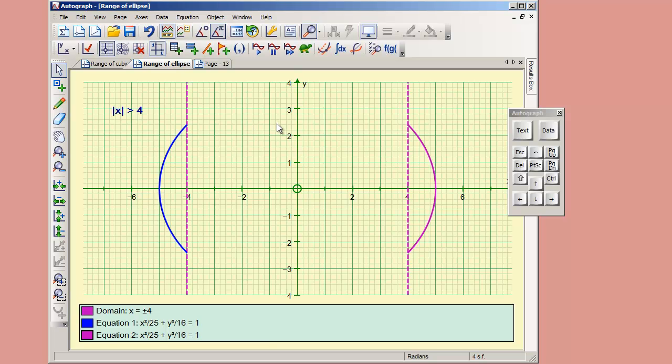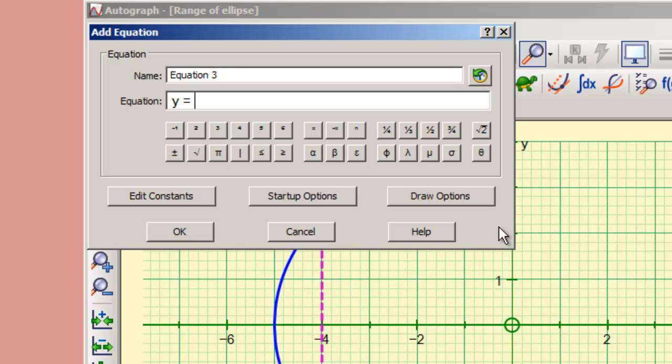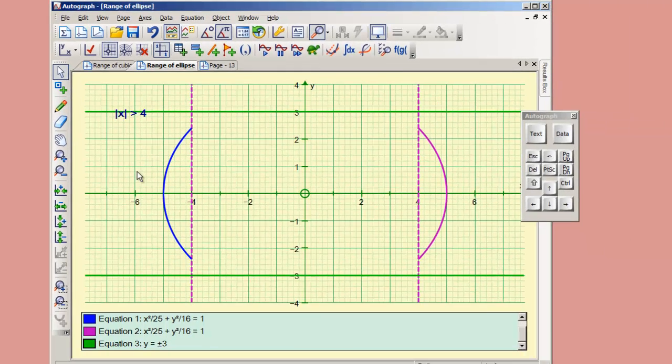What you might also want to do is do the problem the other way around. Supposing you want to cut off the ellipse so that it doesn't have values greater than plus 3 or less than minus 3. For this, we want to enter the equation y equals plus or minus 3. That will give you two graphs along here.